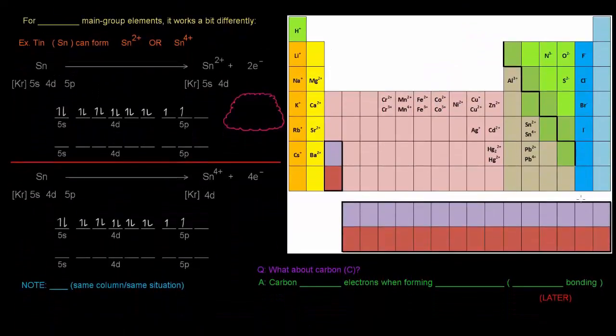Another example: for larger main group elements it works a bit differently. For example, tin (Sn) on the periodic table can form Sn2+ or Sn4+. Sn's configuration is 5s2 4d10 5p2.